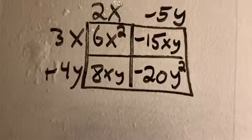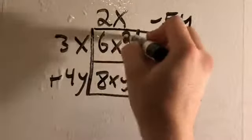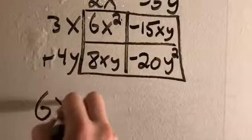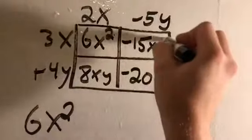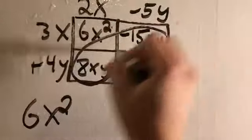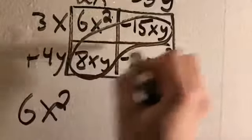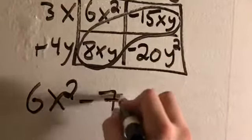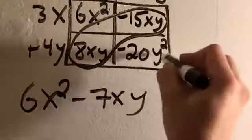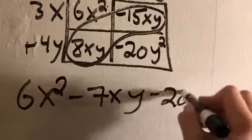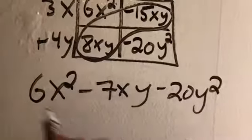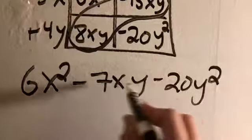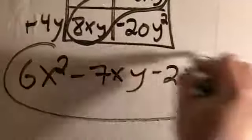Now both of these have x and y after them, so these are like terms. Negative 15xy plus 8xy will be negative 7xy, and there's only one y squared term out here. Now that we're here, none of them have the same variable and exponent anymore, so we are simplified.